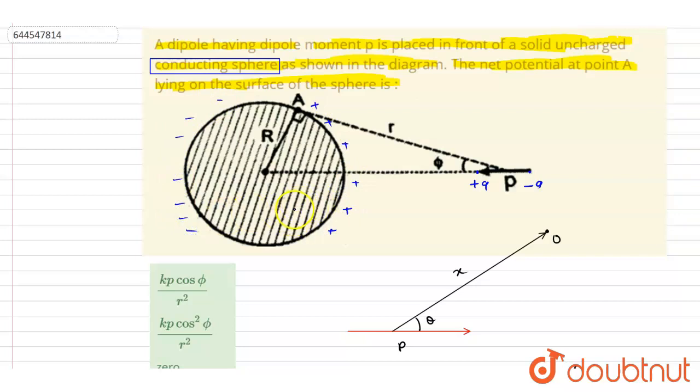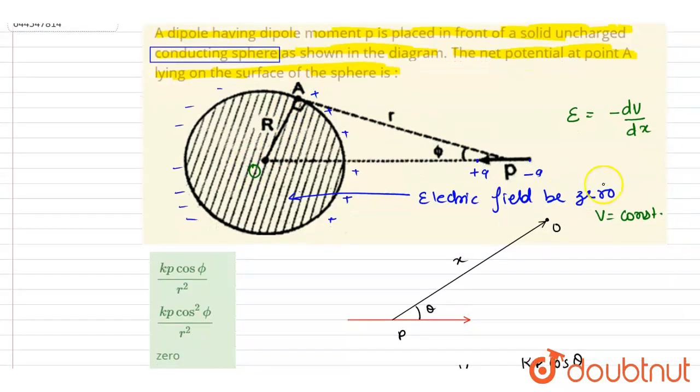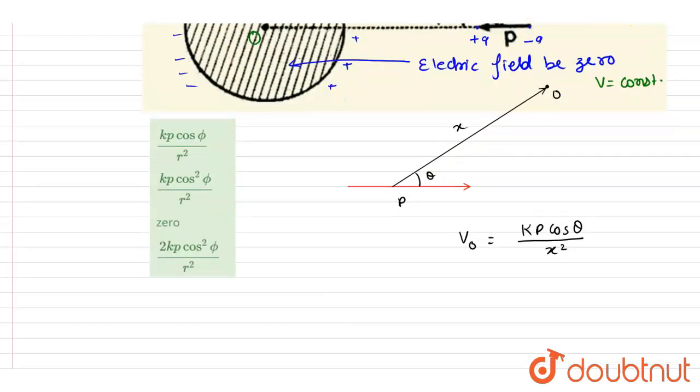In steady state, electric field will be zero. And we know that the electric field is nothing but the rate of change of electric potential. So if the electric field is zero, what does it mean? It means that the potential is constant. Wherever the electric field is zero, there the potential will not change. Right? So if you see, if I mark this point as O and this is point A, so at point O and point A the potential will not change.